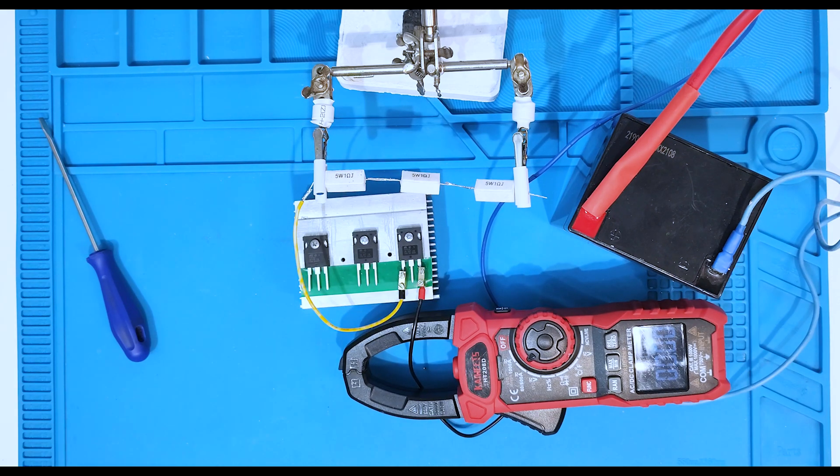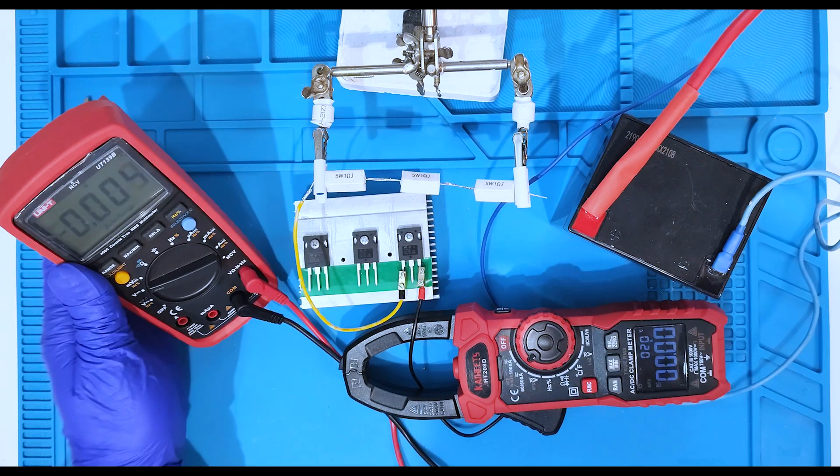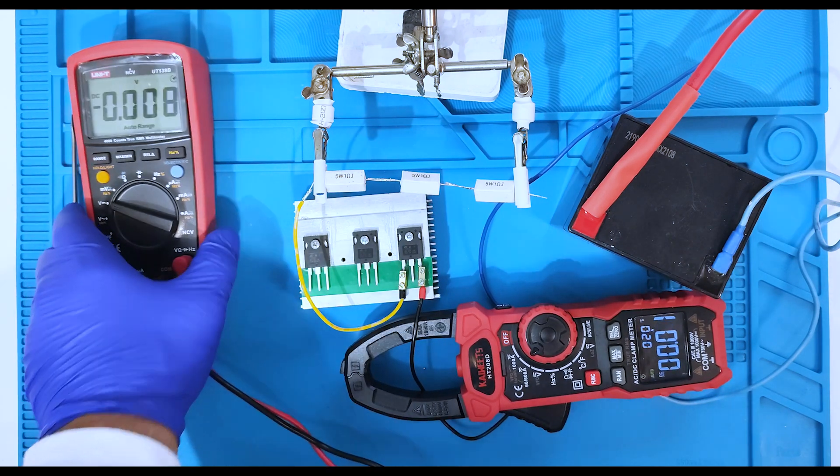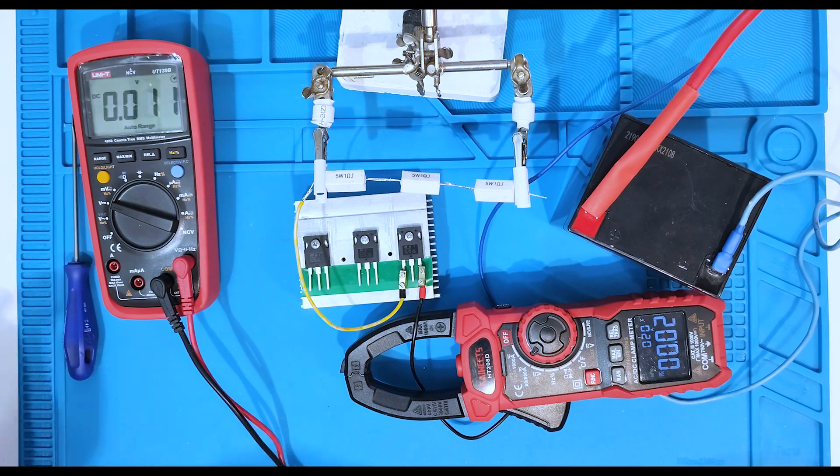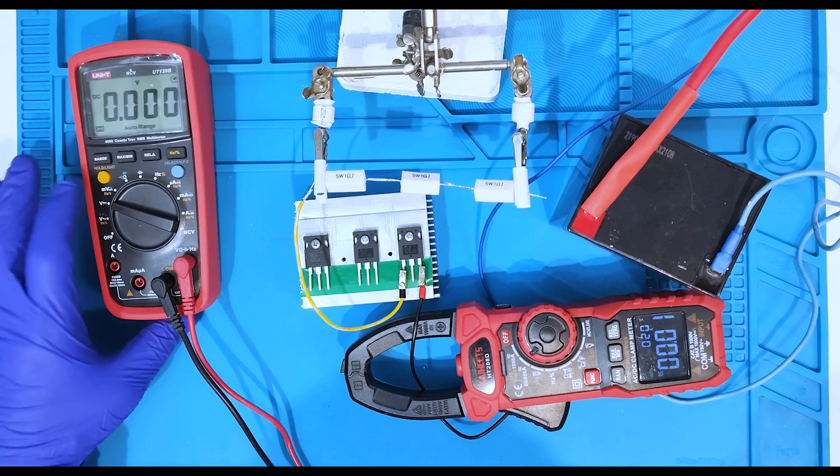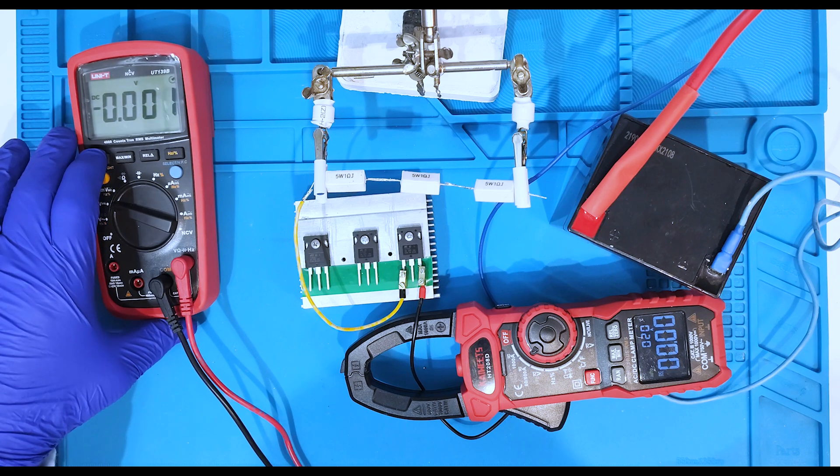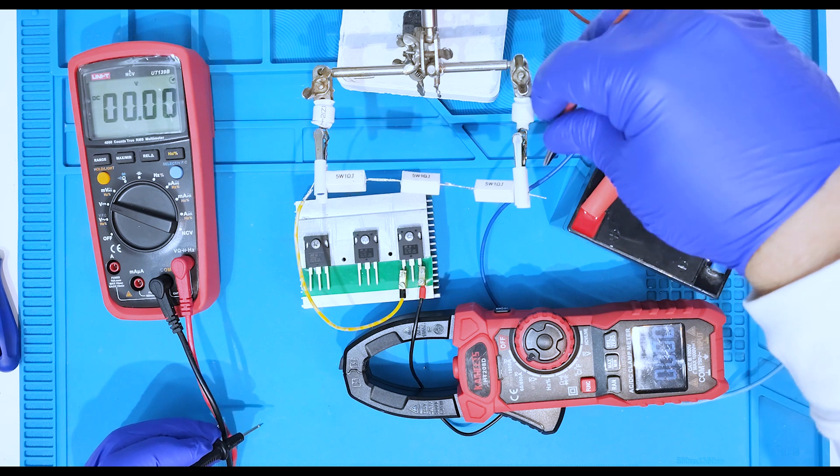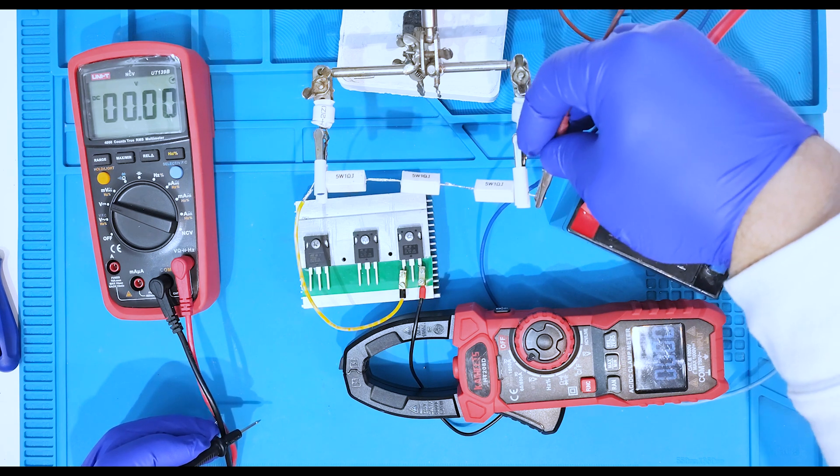And here we are gonna measure the current from emitter of transistor. And we will be able to measure the voltage on the base of transistor. And now let's connect the power to the base of transistor.